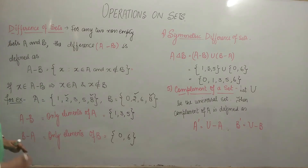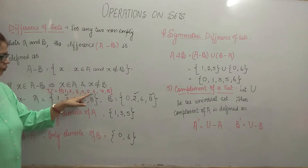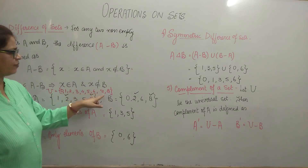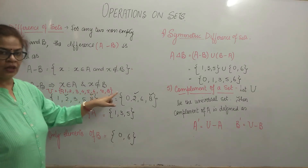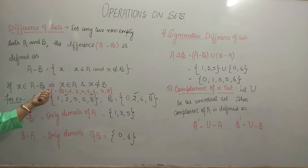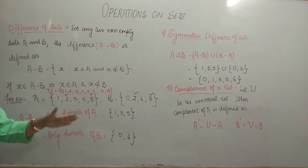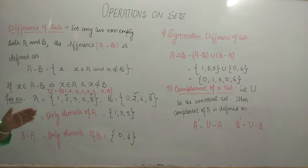Universal set U has elements 0, 1, 2, 3, 4, 5, 6, 7 and 8. You know very well that the universal set is the superset of all the sets for a particular question.